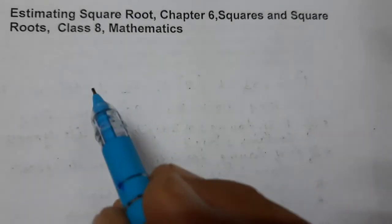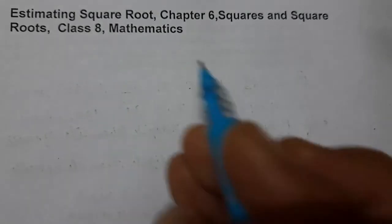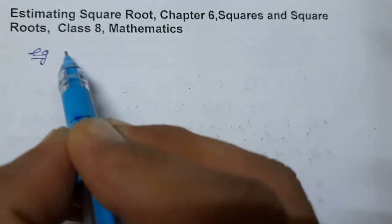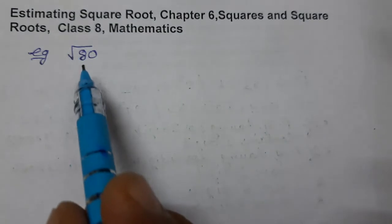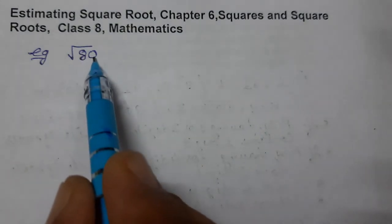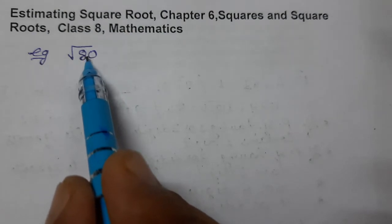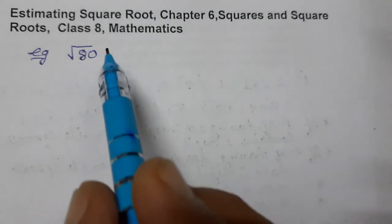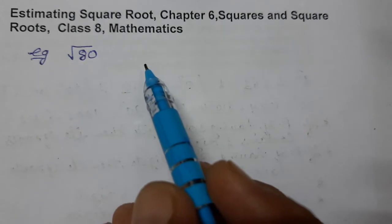Let us take one example. All such numbers are not perfect squares. We need to find the square root of 80, but 80 is not a perfect square. We have to find which two perfect squares this number lies between. So we must know the perfect squares from 1 to at least whatever number we need to find out.